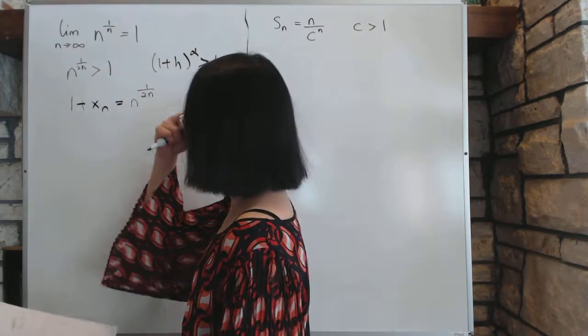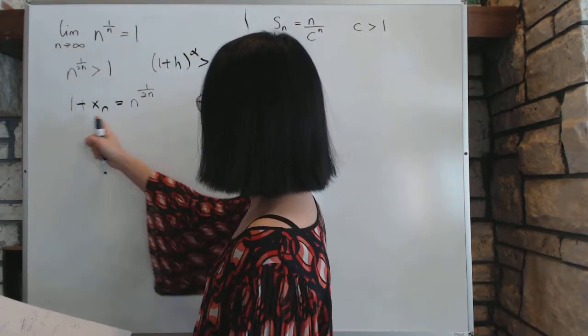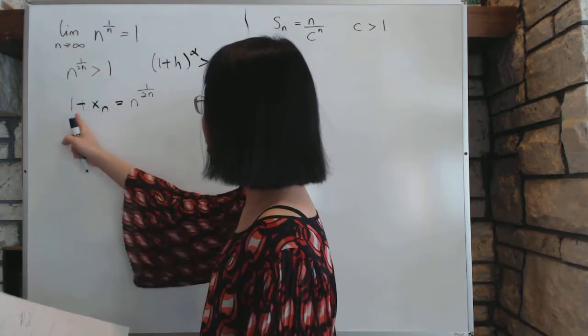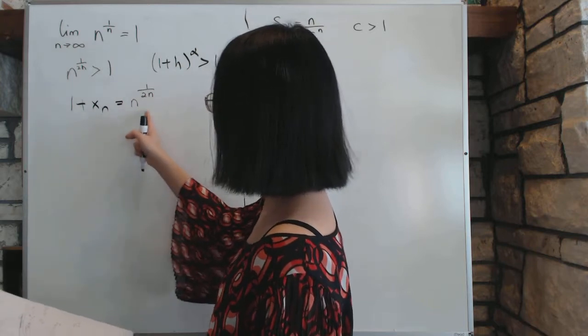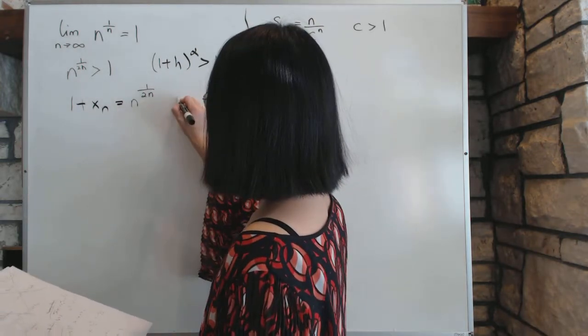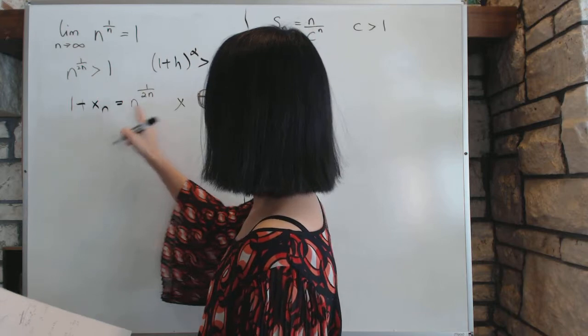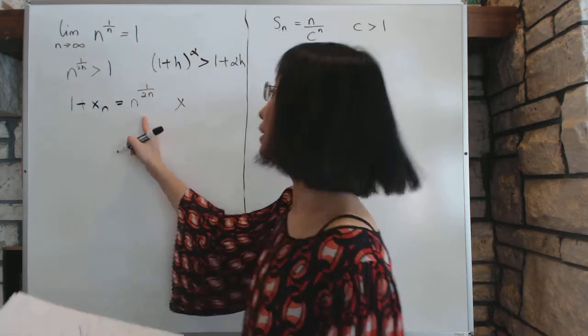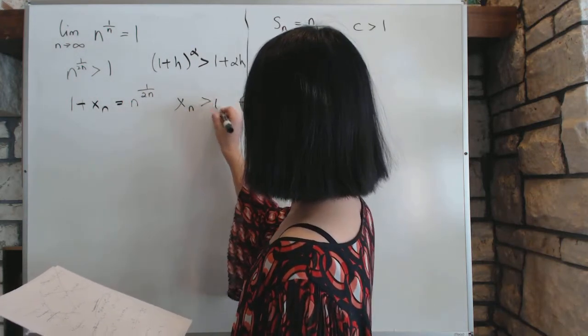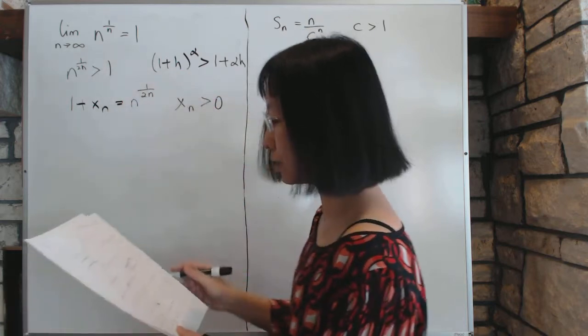So then 1 plus, we'll set up a bunch of xn's such that 1 plus xn equal to this relationship. And in this equation, because this is positive, because this is bigger than 1, xn has to be bigger than 0. We need that to satisfy this inequality.